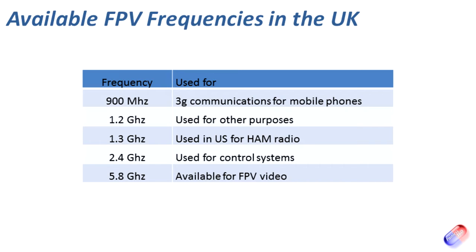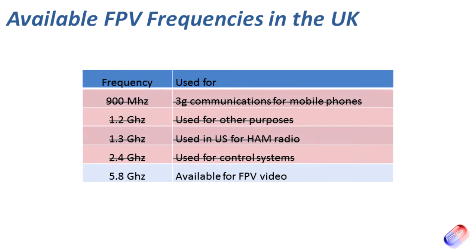900 megahertz is not available here in the UK — it is illegal to use. I think it was 2009 that band was reserved for use in 3G mobile telephony, so that 3G signal you use on your mobile phone is using that. 1.2 and 1.3 gigahertz — 1.2 is used for other purposes, and 1.3 gigahertz you'll occasionally come across being used in the States for ground-based transmission. Again, we can't use that here in the UK.